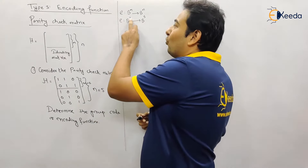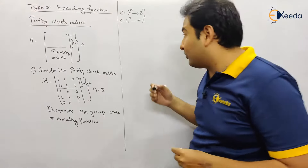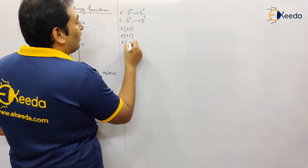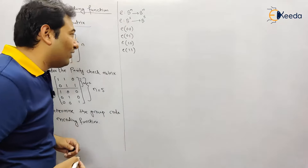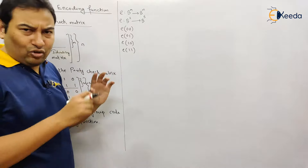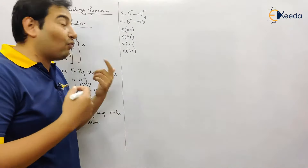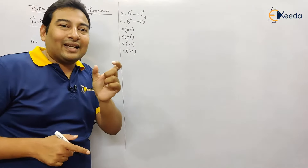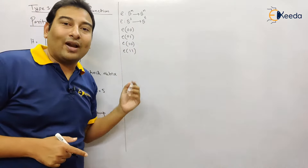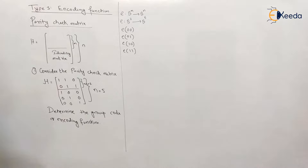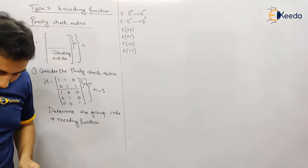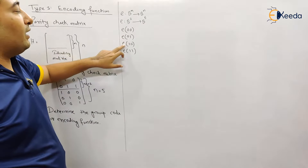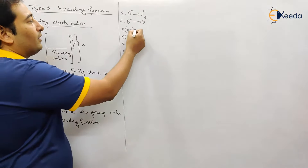That means on the left-hand side the code will be of length two, and on the right-hand side the code will be of length five. The terms on the left-hand side with length two are: 00, 01, 10, and 11. For example, if m were three, then on the left-hand side every code would be of length three, going from 000 up to 111. Now let us start with the problem — we need to find the encoding function, or the group code, for e(00), e(01), e(10), and e(11).